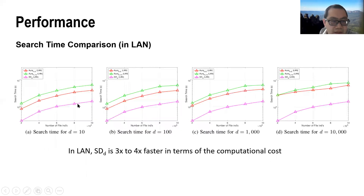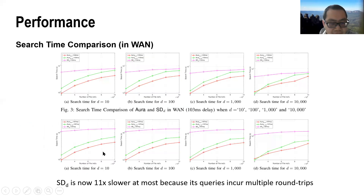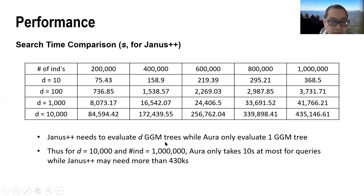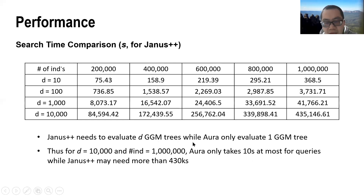The results show that in the LAN setting, SDD is at most three times faster than our solution. But in the WAN setting, SDD is at most 11 times slower than our solution. This is because its queries incur multi-round trips. Compared to JNS+++, our solution is significantly faster, especially for large datasets, because JNS+++ needs to evaluate multiple GGM trees while our scheme only needs to evaluate one GGM tree.